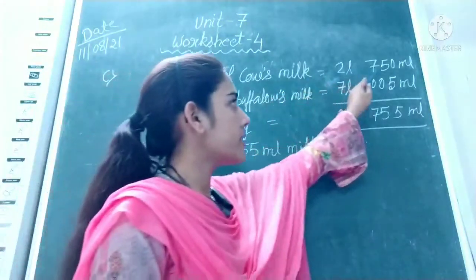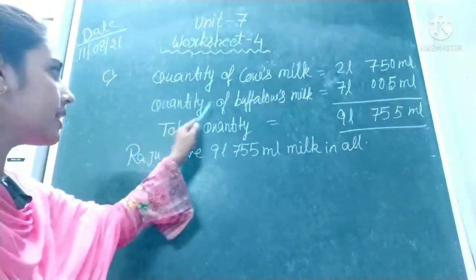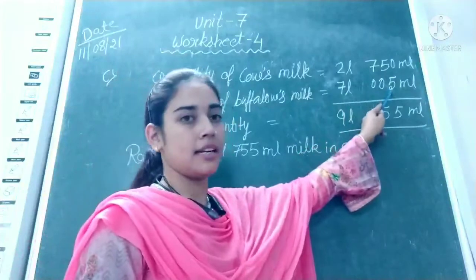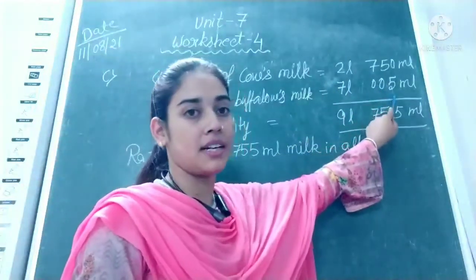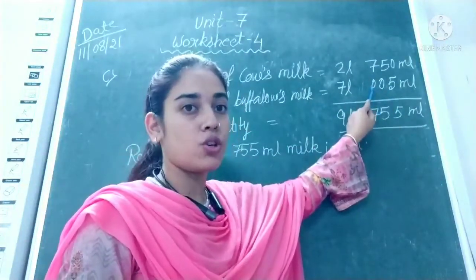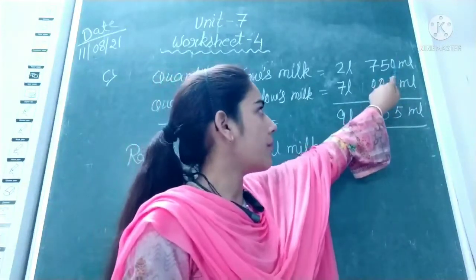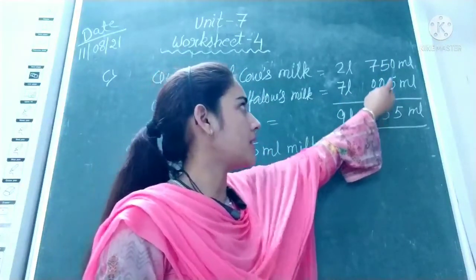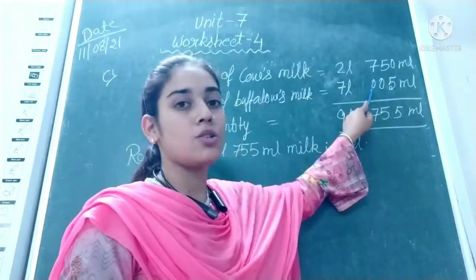Quantity of cow's milk is 2 litres 750 millilitres. Quantity of buffalo's milk is 7 litres 5 millilitres. Remember, for 5 millilitres, don't write it under the tens place. As I told you, write each digit under its correct place. The ones place is 5, and the hundreds place is 7, so write accordingly.